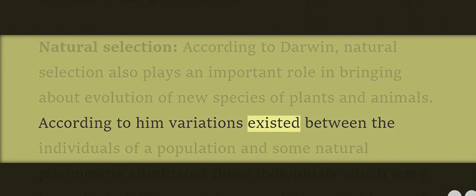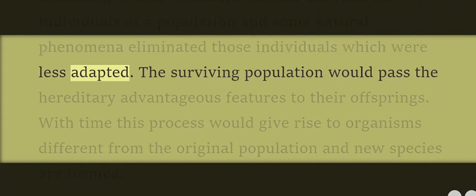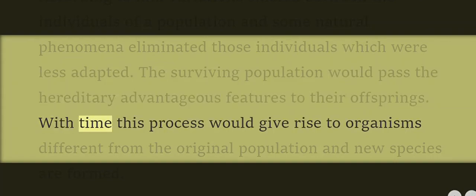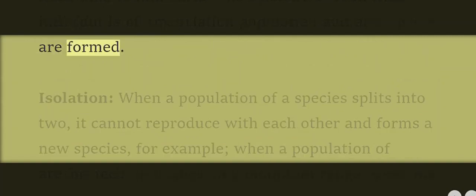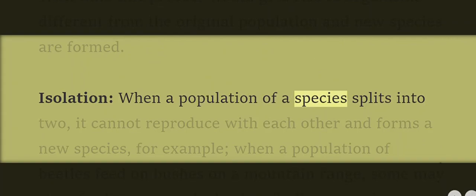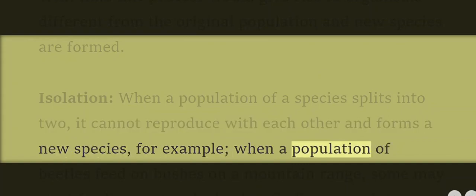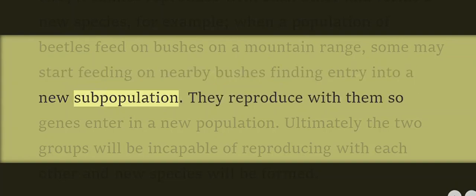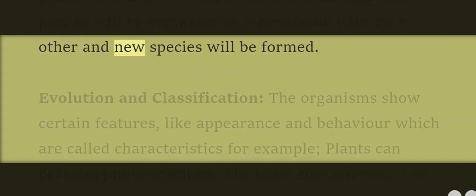According to Darwin, variations existed between the individuals of a population, and some natural phenomena eliminated those individuals which were less adapted. The surviving population would pass hereditary advantageous features to their offspring, and with time this process would give rise to organisms different from the original population — forming new species. Isolation: When a population of a species splits into two groups that cannot reproduce with each other, a new species is formed. Ultimately, the two groups become incapable of reproducing with each other and a new species is formed.